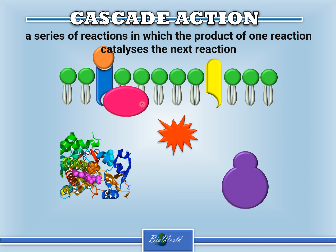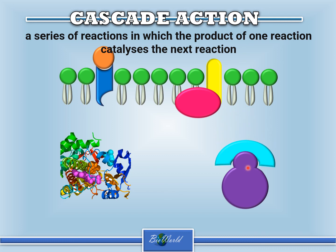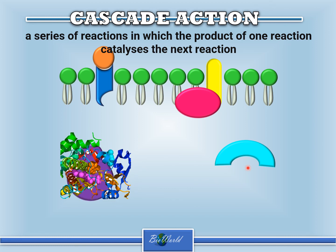The active G protein behaves like an enzyme by converting the inactive adenylate cyclase into active adenylate cyclase. The active adenylate cyclase then catalyzes the conversion of ATP into cyclic AMP. Cyclic AMP will then behave like an enzyme by helping to convert the inactive protein kinase into active protein kinase. The active protein kinase will then convert inactive proteins or inactive enzymes through phosphorylation to become active enzymes or active proteins. You can see each step is dependent on the other — that is what we call cascade action.